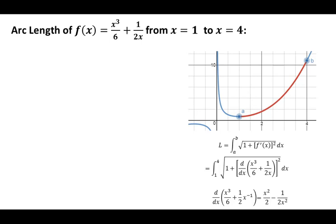Now that we've found the derivative, our goal is to take this quantity in red and get it into a form that's easy to take the square root of. That's the difficult challenge about arc length problems — the integral of 1 plus this function squared can typically be very difficult to solve. The idea is to make this simpler and get what's bracketed in red into an easier format.